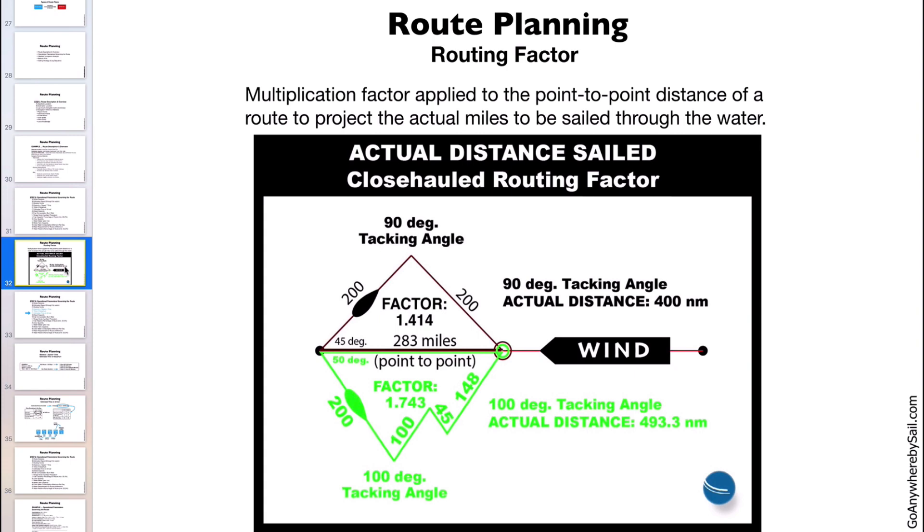Before I get into the close-hauled routing factor, let's look at the other option where you're reaching. If you are performing a reaching leg from A to B, pretty much every mile you sail is the exact mile required to complete the journey.